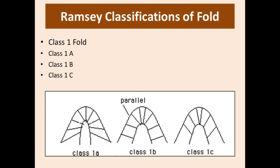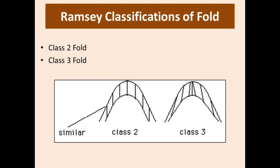Class 1a is the type in which hinges are thin and limbs are thick. In Class 1b, hinges and limbs are the same thickness — Class 1b is an example of parallel folding. Class 1c has thick hinges but thin limbs and a sharper inner curvature. Class 2 fold has inner curvature similar to outer curvature — an example is similar folding. Class 3 folds have outer curvature greater than inner curvature, and isogons diverge towards each other.